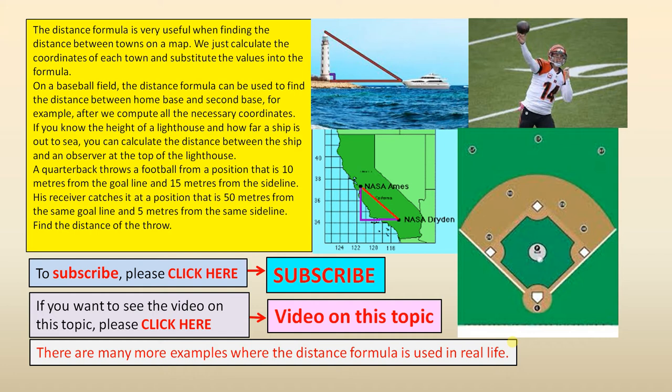a football from a position that is 10 metres from the goal line and 15 metres from the sideline. His receiver catches it at a position that is 50 metres from the same goal line and 5 metres from the same sideline. Find the distance of the throw.